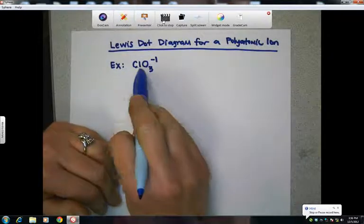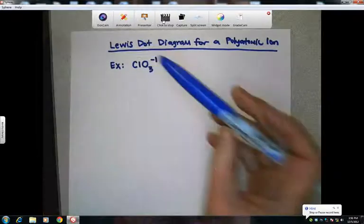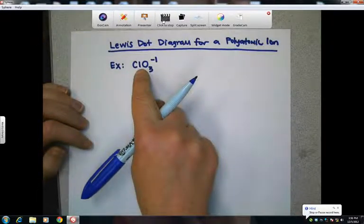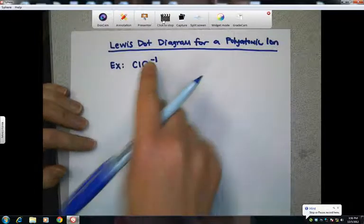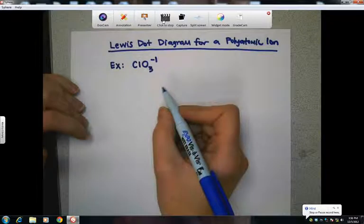However, it is made of chlorine and oxygen, which are both non-metals. So the chlorine and the oxygen are actually held together by sharing covalent bonds, so they're sharing electrons. It just happens that there's an extra electron on there somewhere, giving it a negative one charge. So how would we draw this?